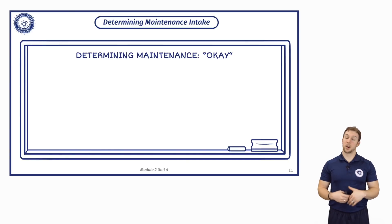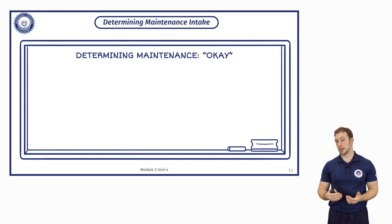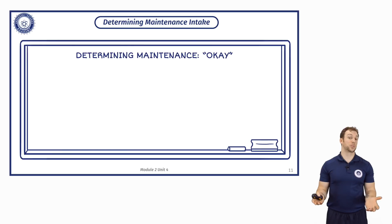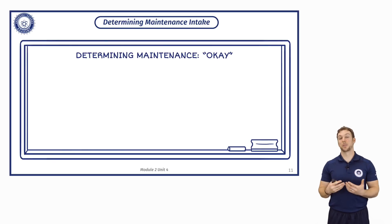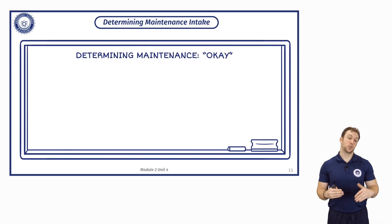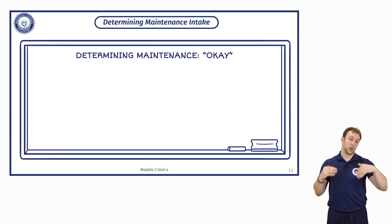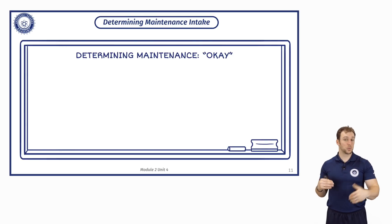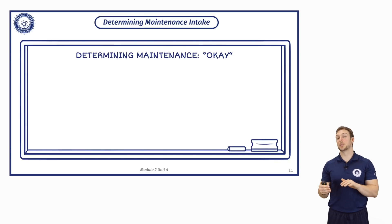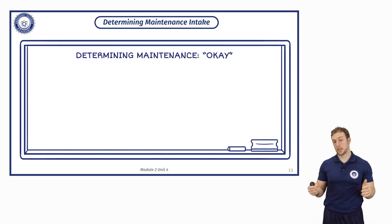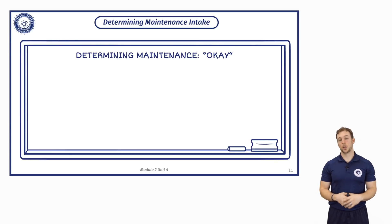For us to set up a diet, talk about macronutrients, and manipulate that diet over time, we first have to have somewhere to start from. This is what's called establishing maintenance calories. To figure out what we need to do to have someone lose weight or gain weight, we have to know what it takes for them to maintain weight. There are a few ways we can figure this out.